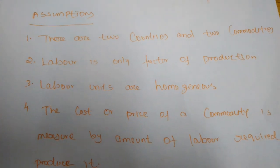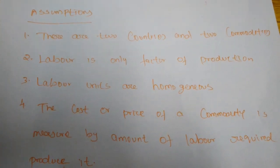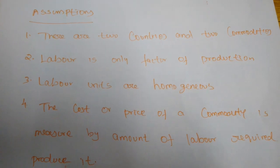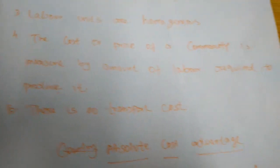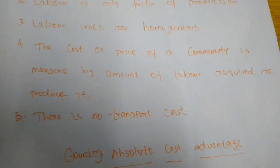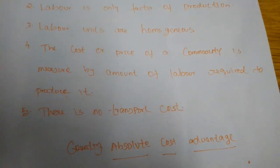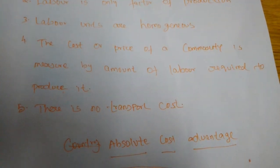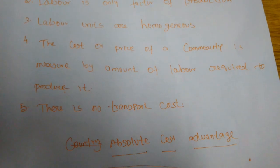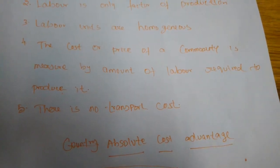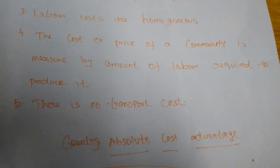The fourth assumption is important: the cost or price of a commodity is measured by the amount of labor required to produce it. How much labor is involved to produce any commodity — that determines the price of the commodity.